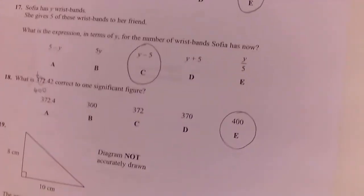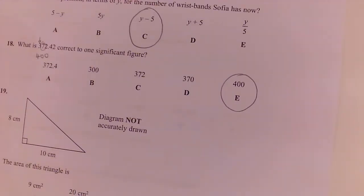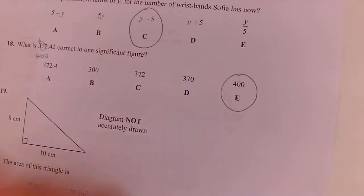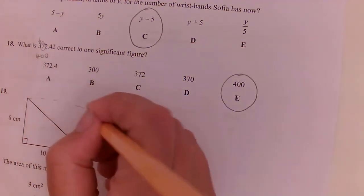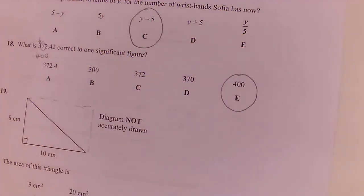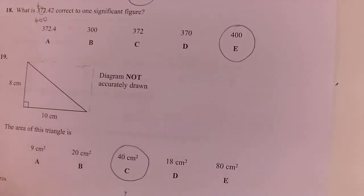Question 19. The area of the triangle. Well, if we times those two numbers together, that would give us the area of a rectangle, 80 centimeters squared. And then we would need to half that. So the area of a triangle is 40 centimeters squared. The base times the height, and then we divided by two. 40 centimeters squared. The most common mistake there would be to write E.